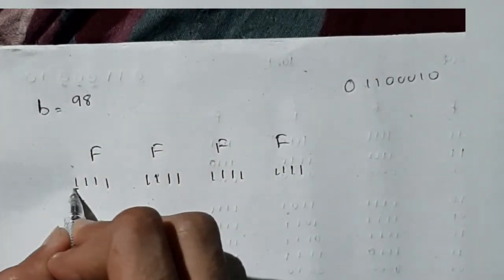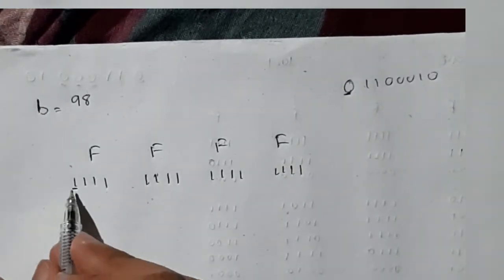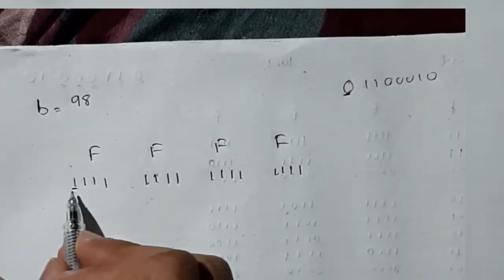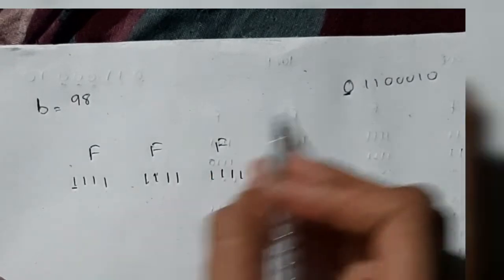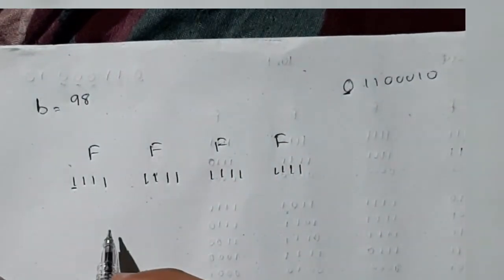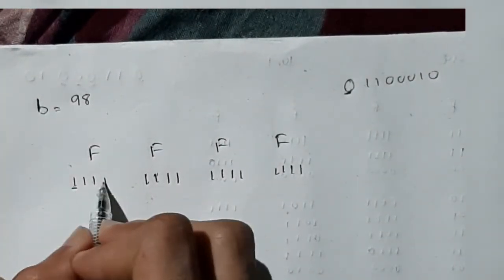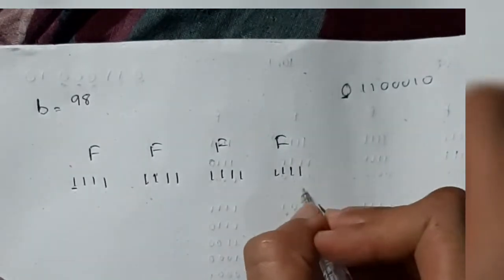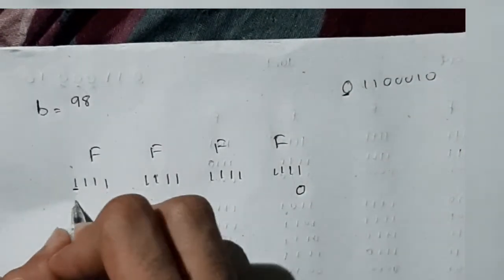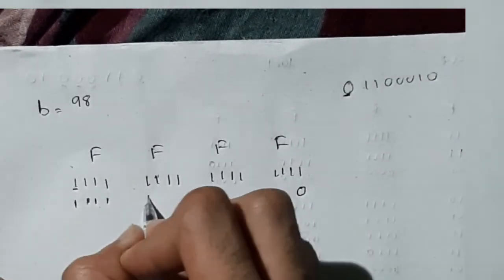The first step is always to compare the leftmost bit of our data with the leftmost bit of FFFF. If they are not the same — for example, 1 and 0 — we have to left shift. Left shift means all the 1s shift one place to the left, a 0 is inserted from the right side, and the leftmost bit is discarded.